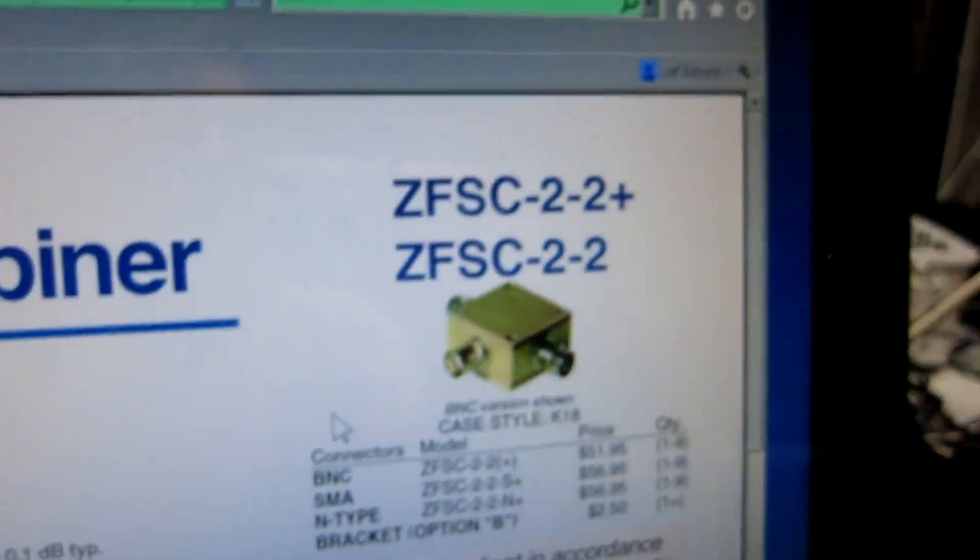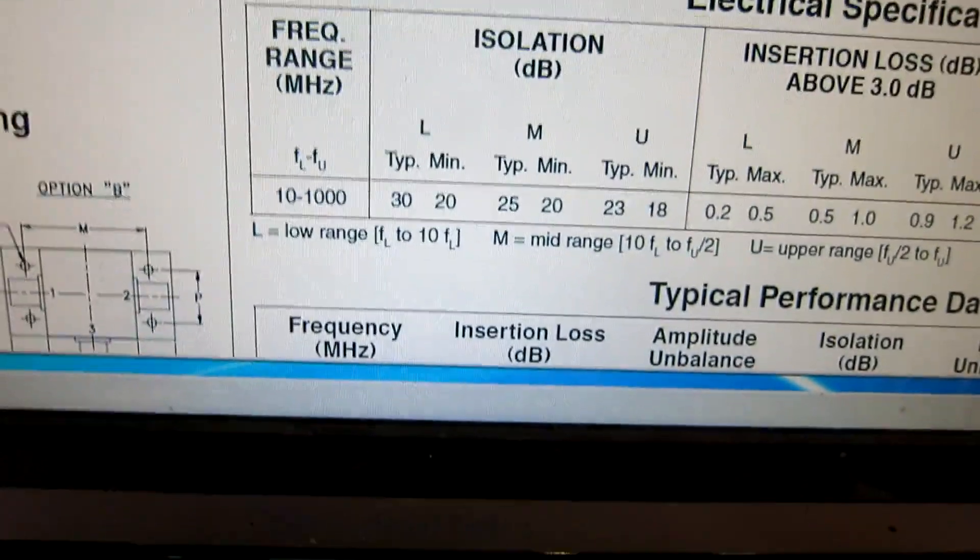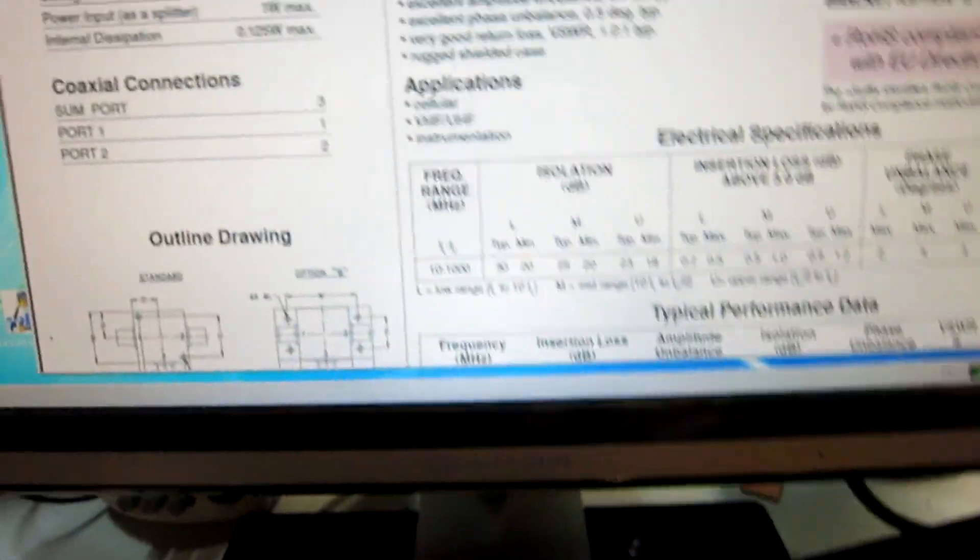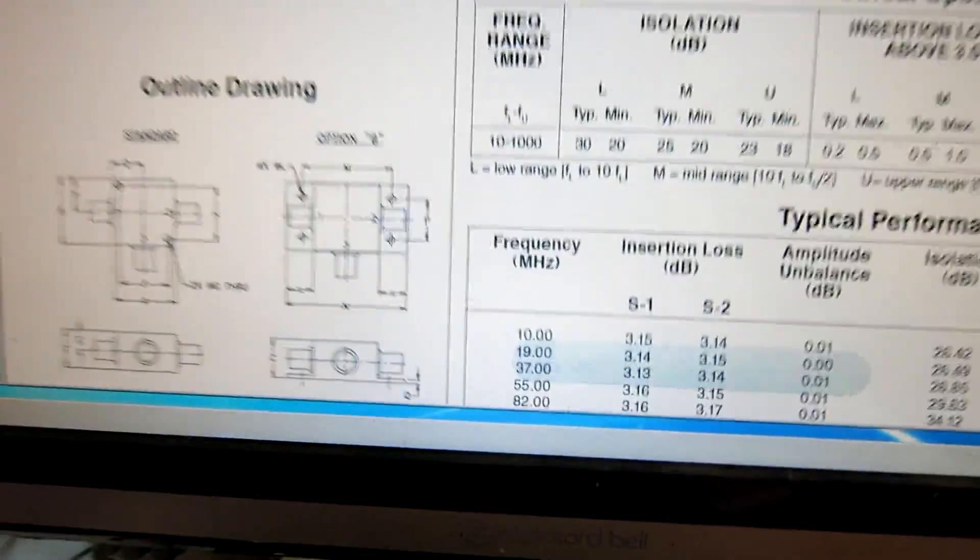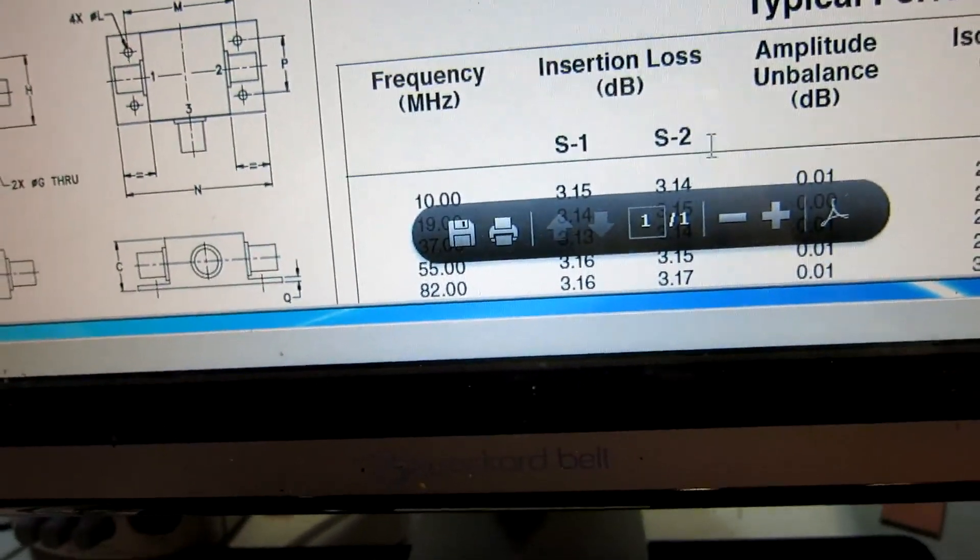The splitter combiner is this one, and the losses are low, 0.15 dB only.